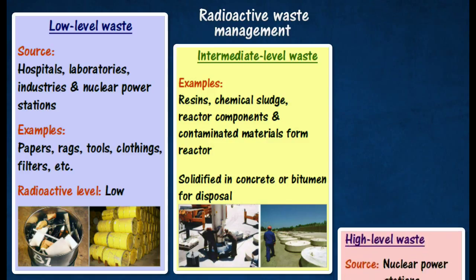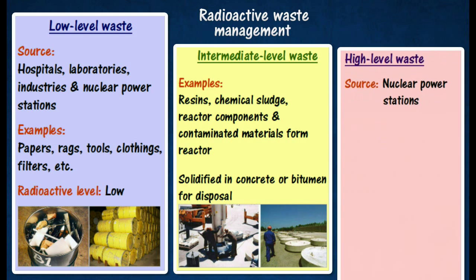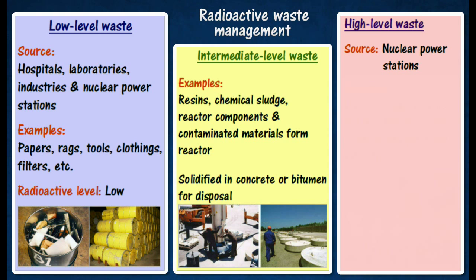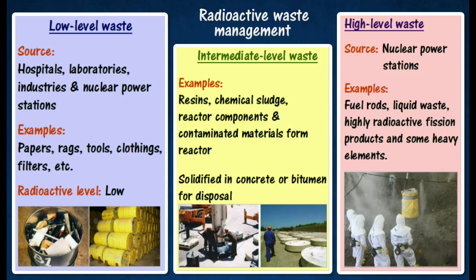High-level waste accounts for over 65% of the total radioactivity produced in the process of nuclear electricity generation. Such waste is highly radioactive and generates a considerable amount of heat. Examples include fuel rods, liquid waste, highly radioactive fission products, and some heavy elements. Such waste may be vitrified by incorporating it into borosilicate glass, which is sealed in stainless steel canisters and buried deep underground at about 600 meters.